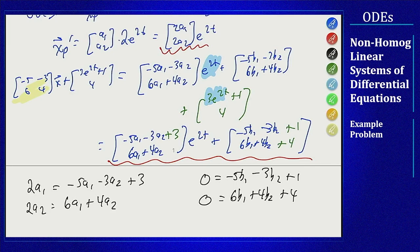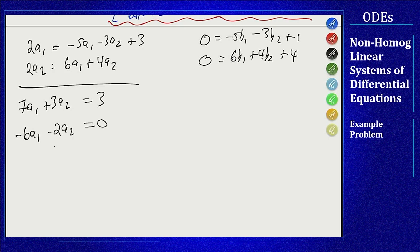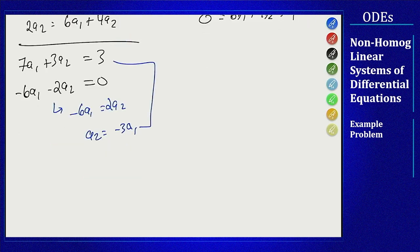Now we can solve this for a1 a2 b1 b2 as two separate 2 by 2 systems. For the a's first, I can rewrite these equations by moving all of the a's to the left side and leave the numbers on the right side. So I will see 7a1 plus 3a2 equals 3, minus 6a1 minus 2a2 equals 0. I will rewrite this as minus 6a1 equals 2a2, or a2 equals minus 3a1. And I can plug that into here to get 7a1 minus 9a1 equals 3, negative 2a1 equals 3, or a1 equals minus 3 halves.